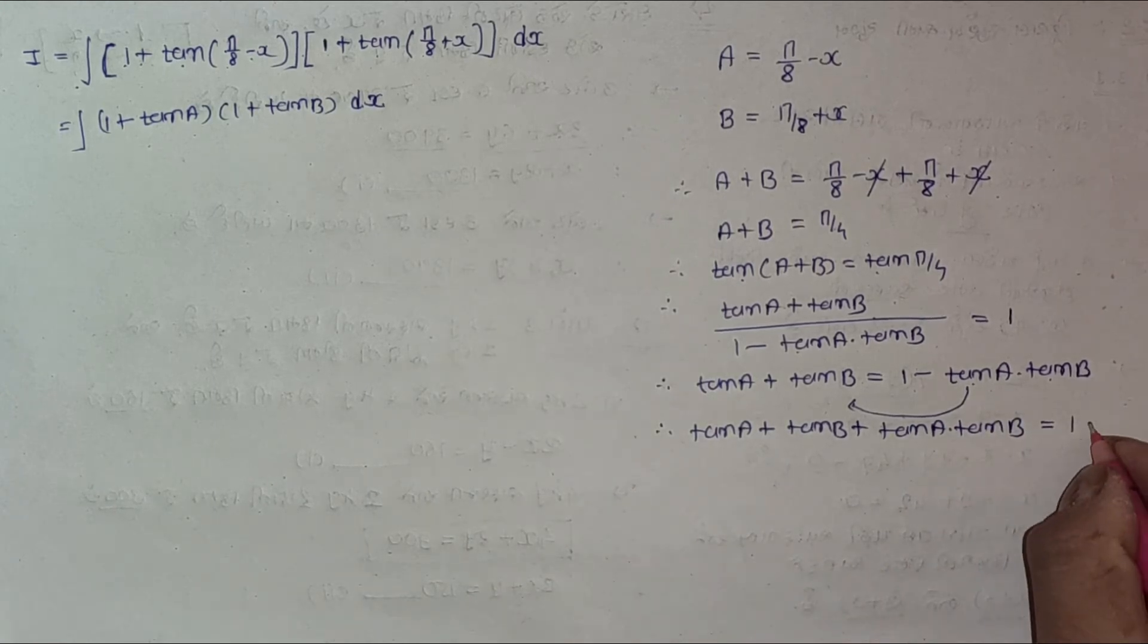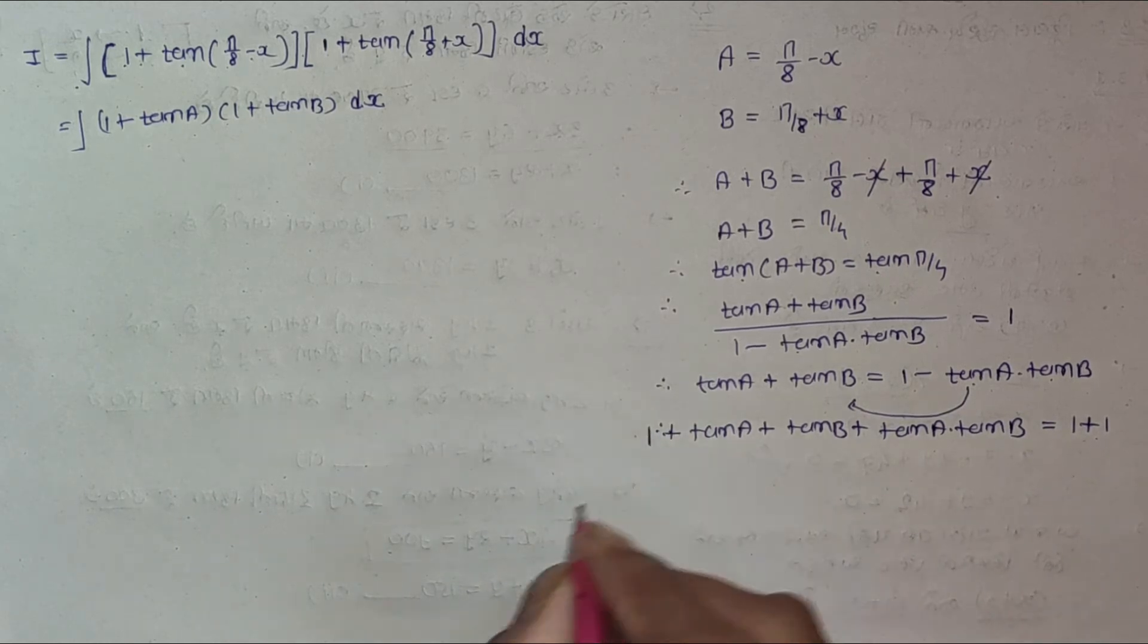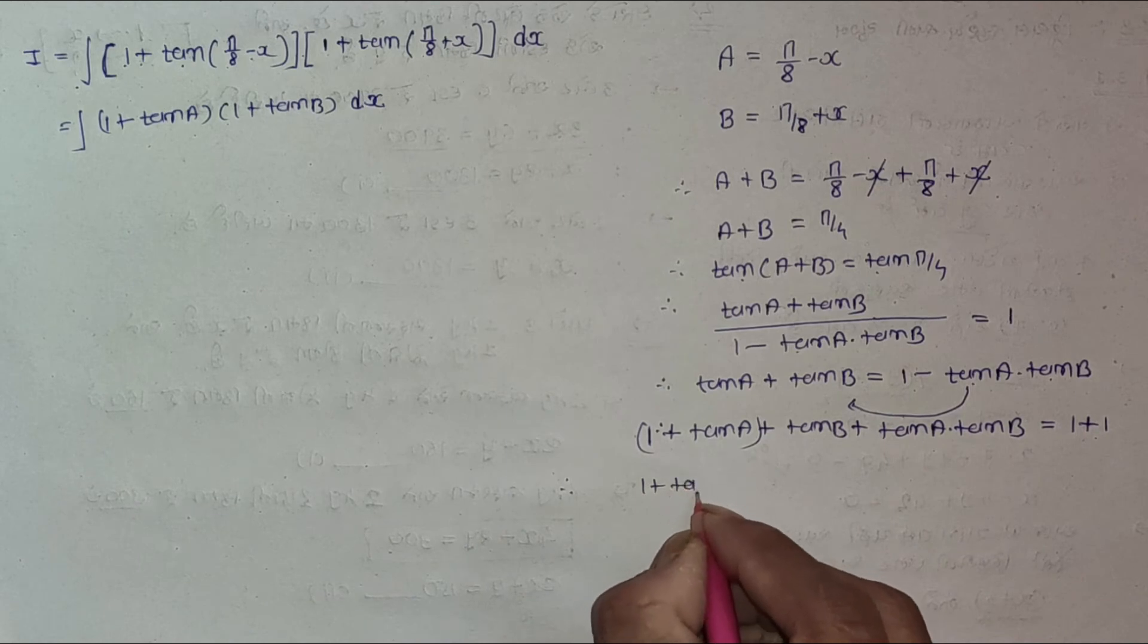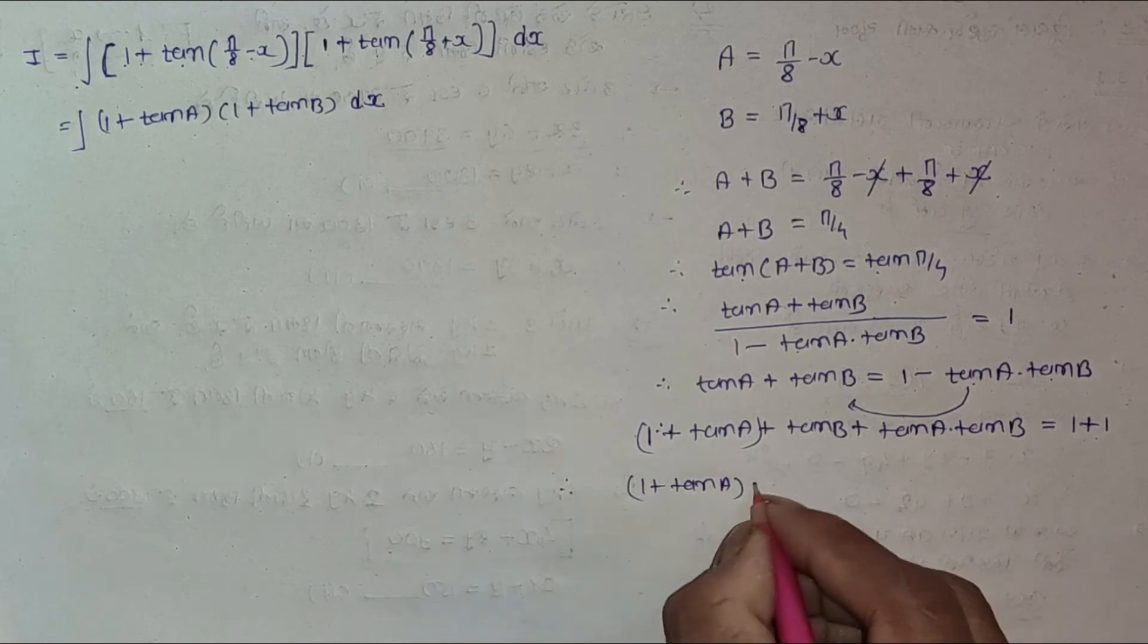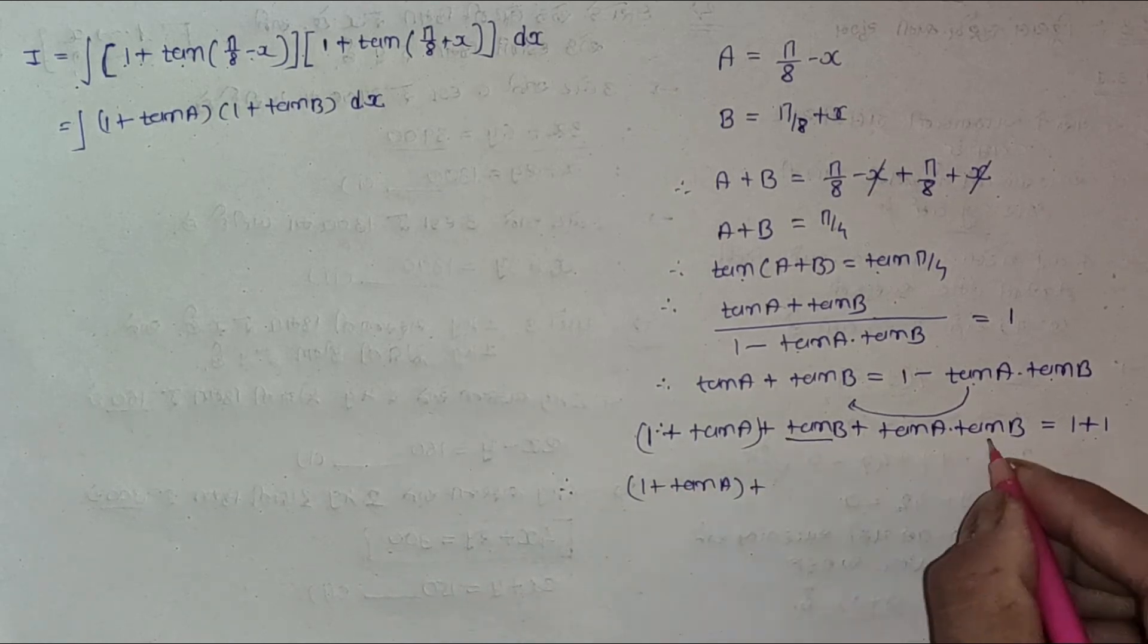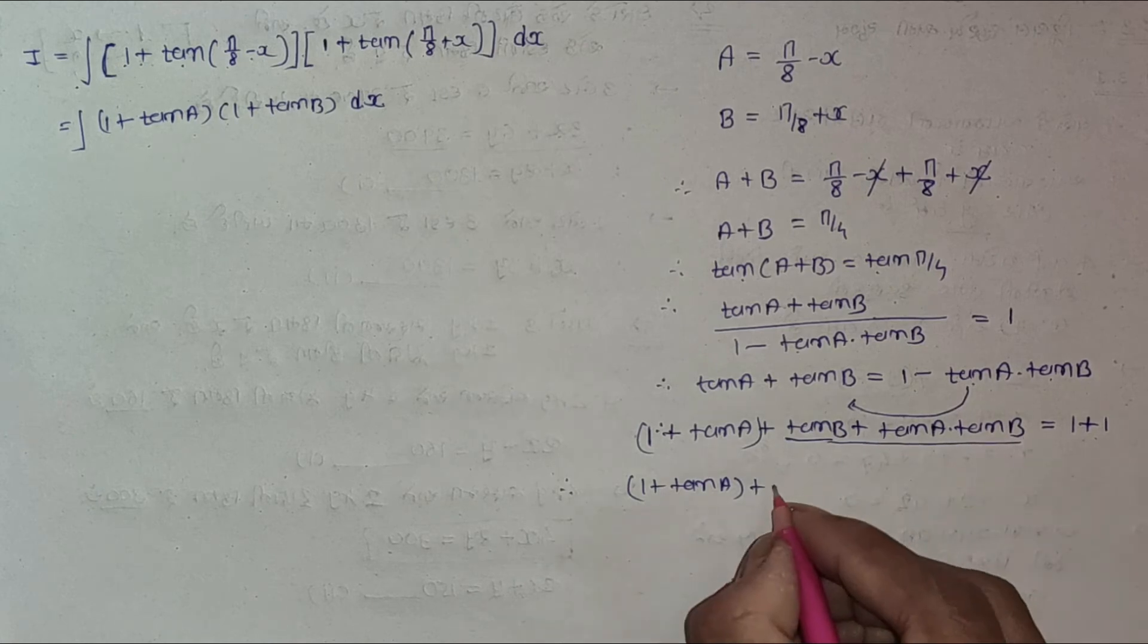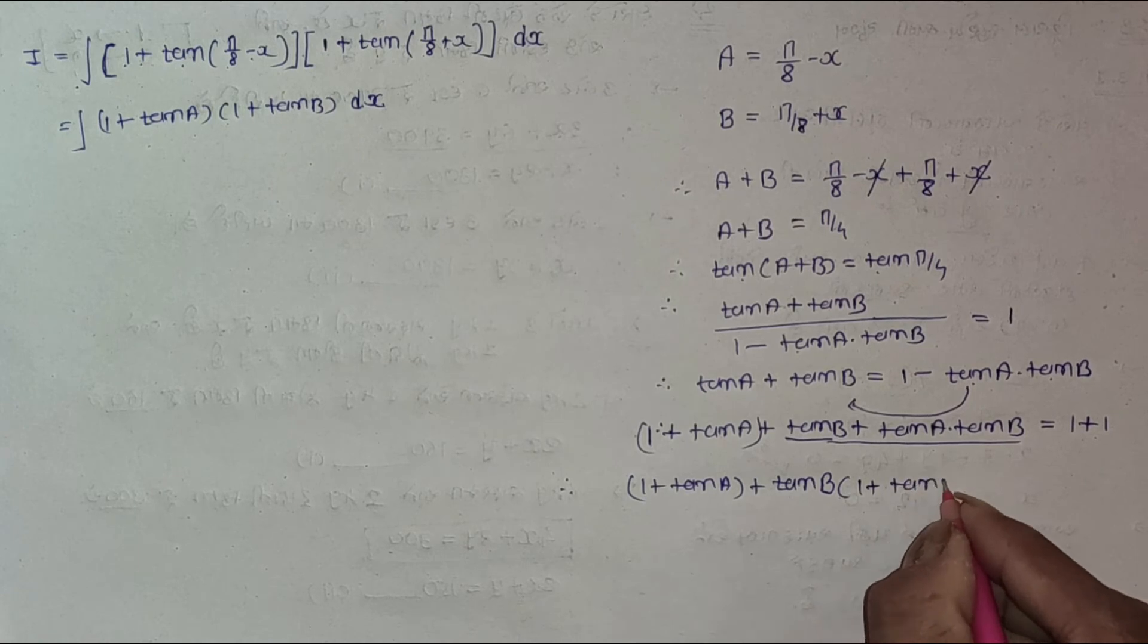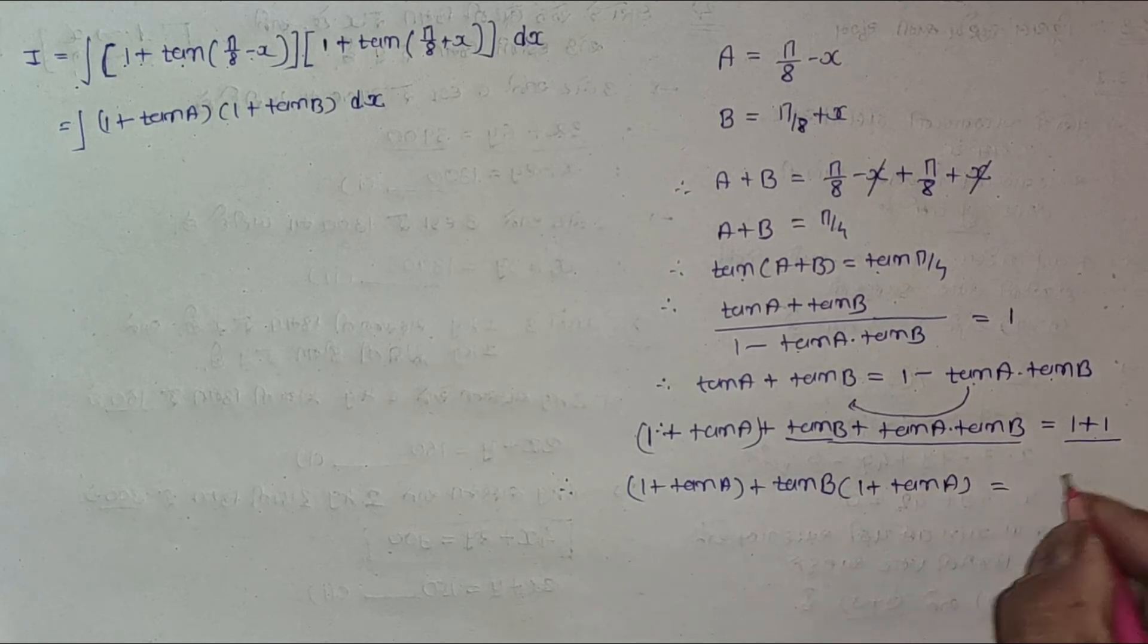Now let me add 1 to both sides. So we have 1 + tan A + tan B + tan A · tan B equals 2.